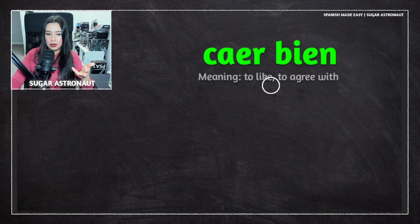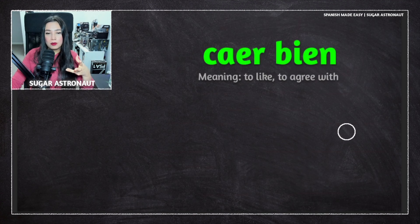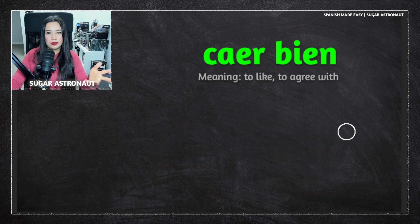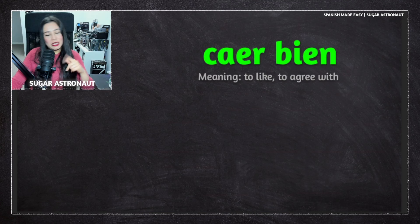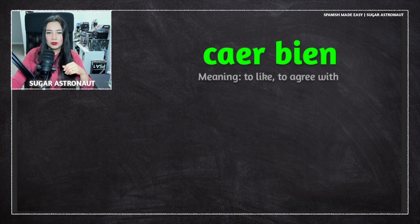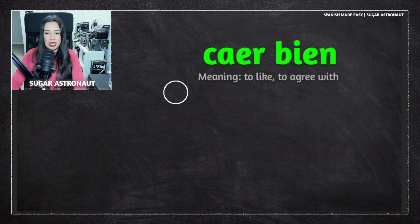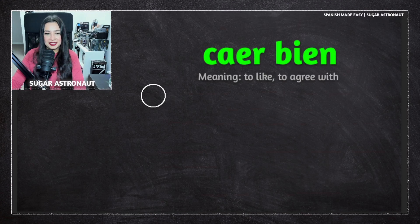This phrase is used among friends. When it means 'to like,' you're not saying it in a romantic way — you're just saying you're a cool person, a nice person. It's a casual phrase you can use with someone you like. Now let's look at some examples using this verb phrase — you need to know the conjugation of the verb caer.